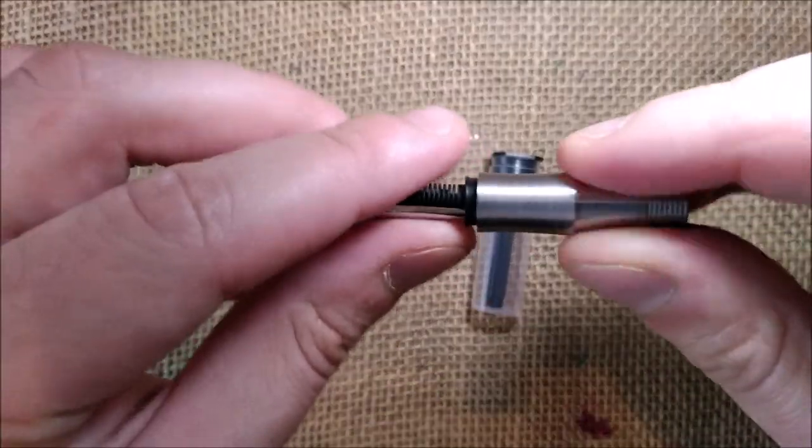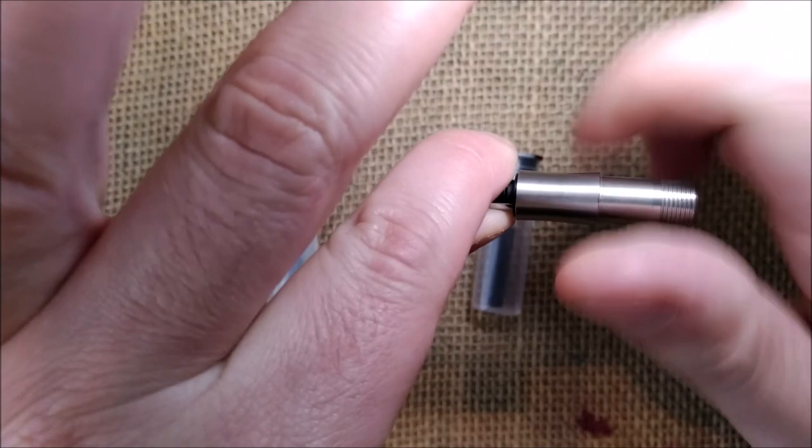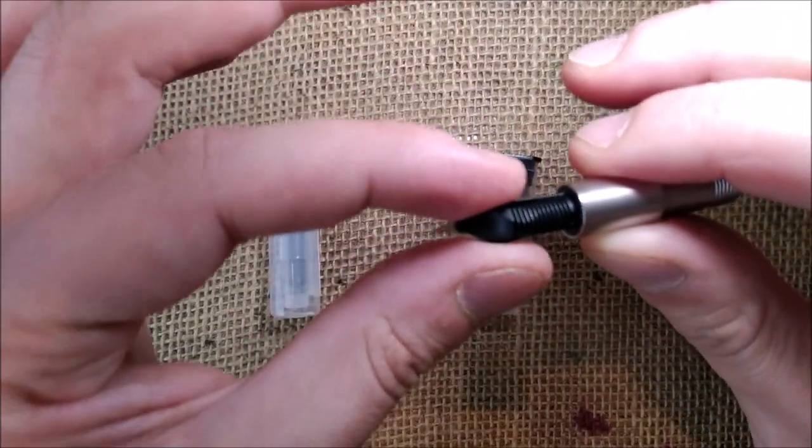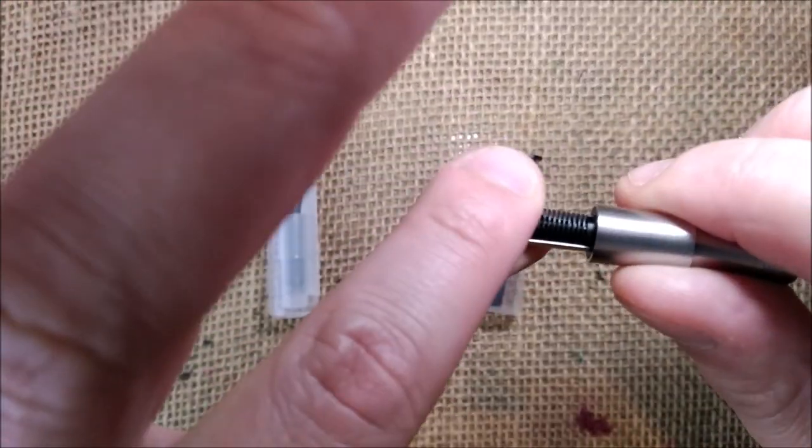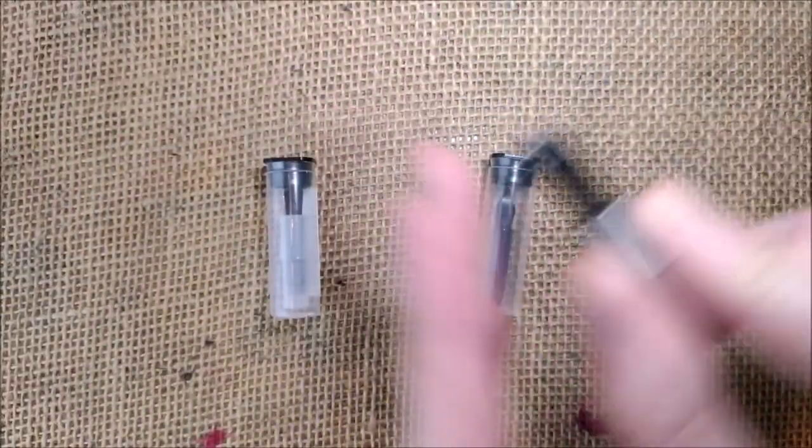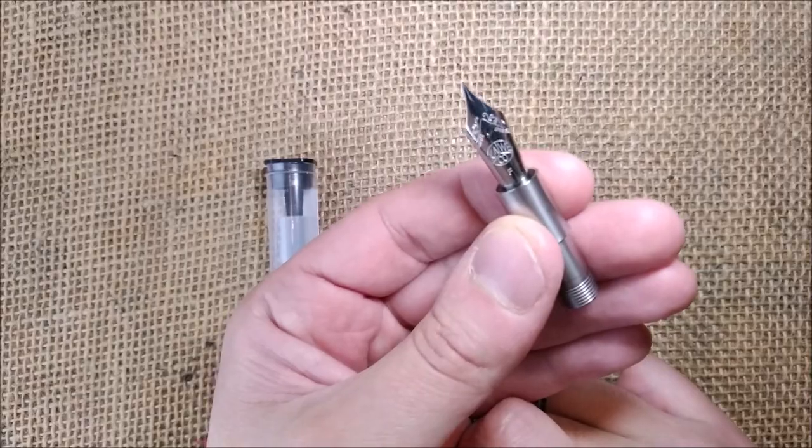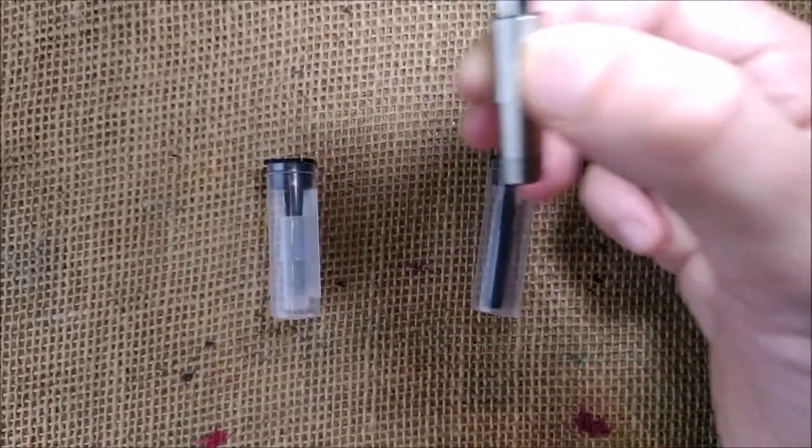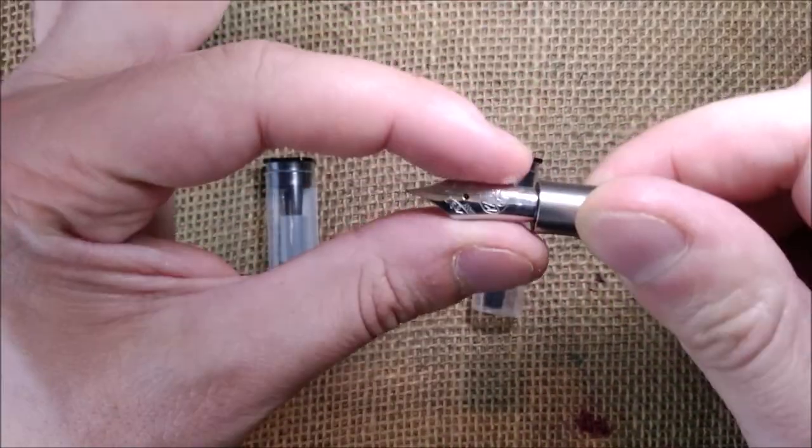You could do this without the rubber part. And I will do it without the rubber part now. Just hold it tightly but not too tight and keep the same alignment for the nib, don't get disaligned with the rest. So now you have a new nib on your supra pen. This is the number 6 nib, the big one.